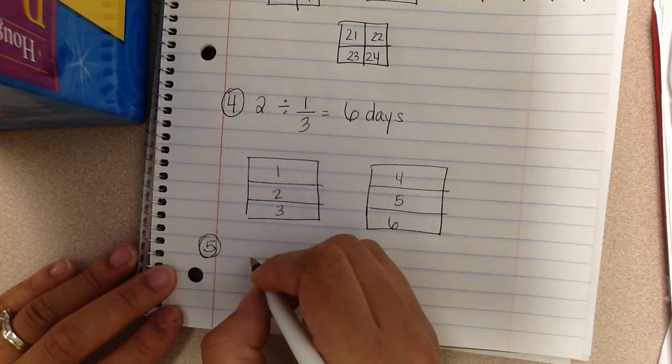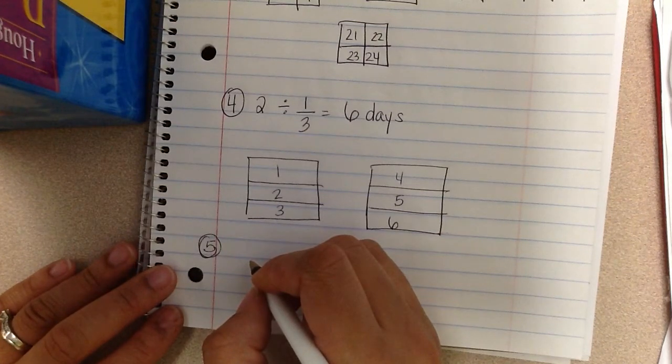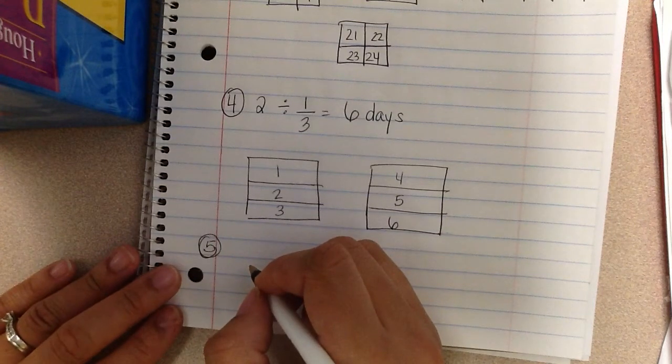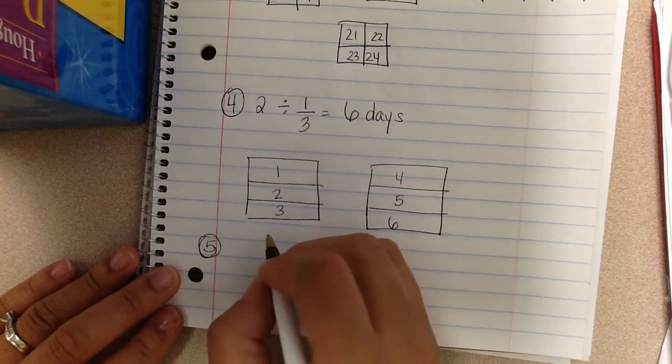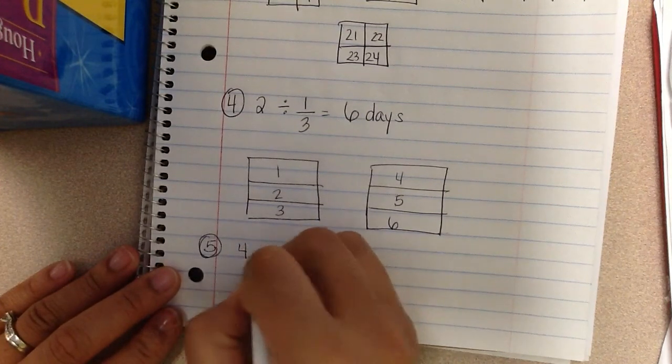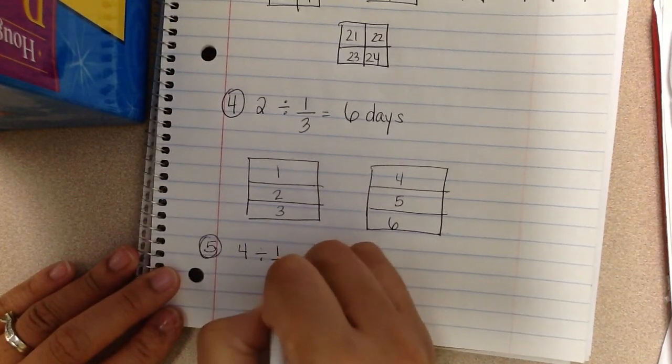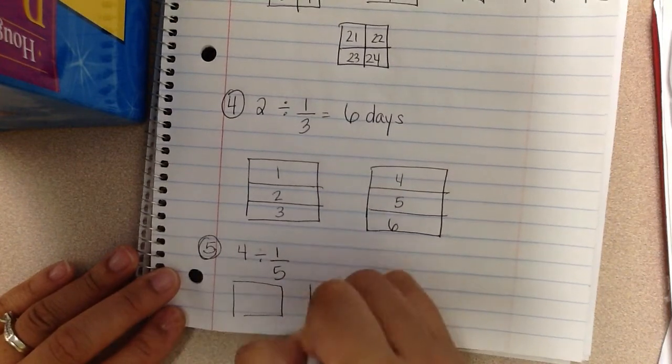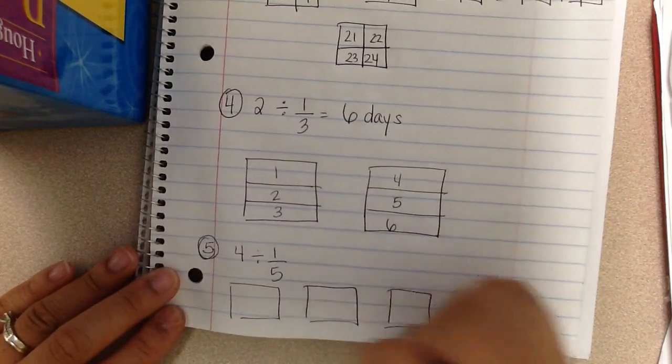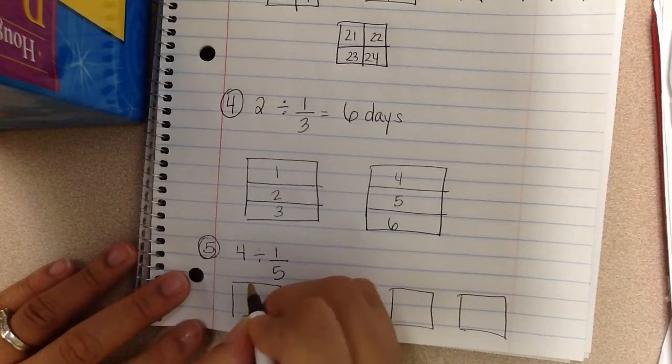Number five. Mrs. Perkins has four bags of sugar. She uses one fifth of a bag of sugar each time she makes lemonade. How many times can she make lemonade before she runs out? So four bags divided by one fifth. Take four boxes and split them into fifths.